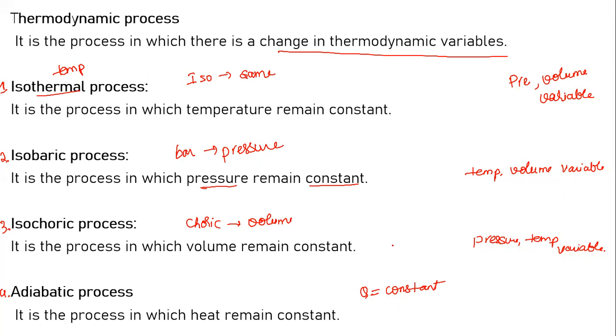So there are four types of thermodynamic processes: isothermal process, isobaric process, isochoric process, and adiabatic process. We are going to study in detail about the isothermal process and the adiabatic process.